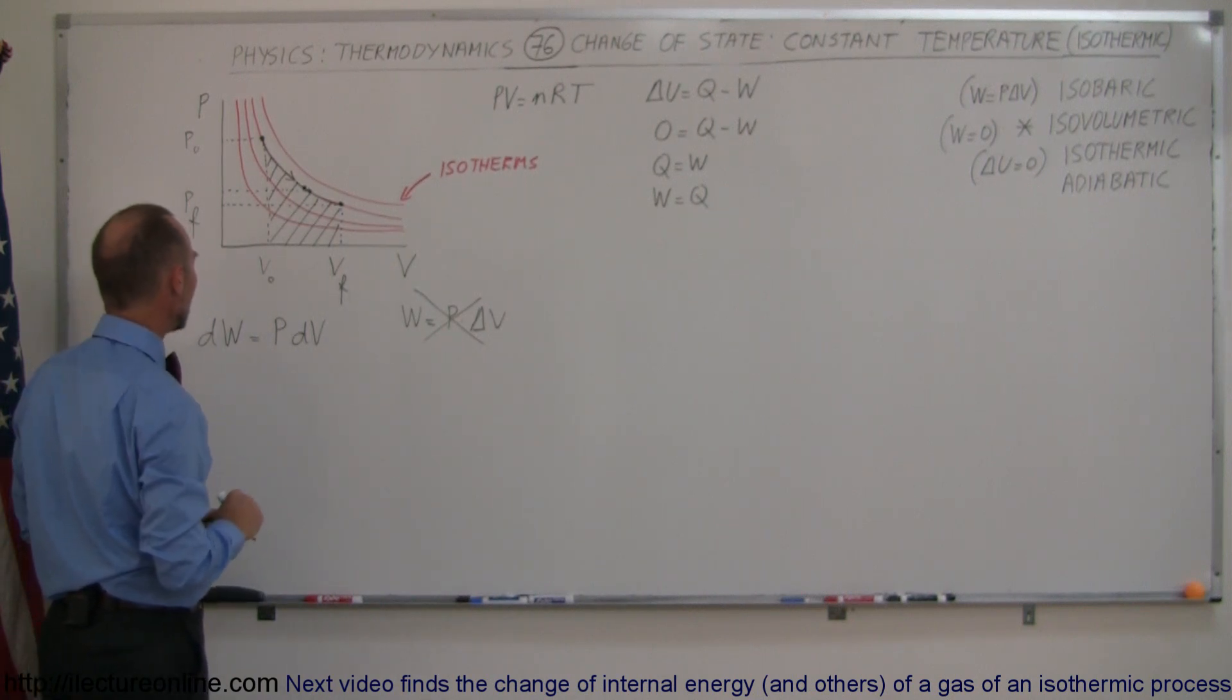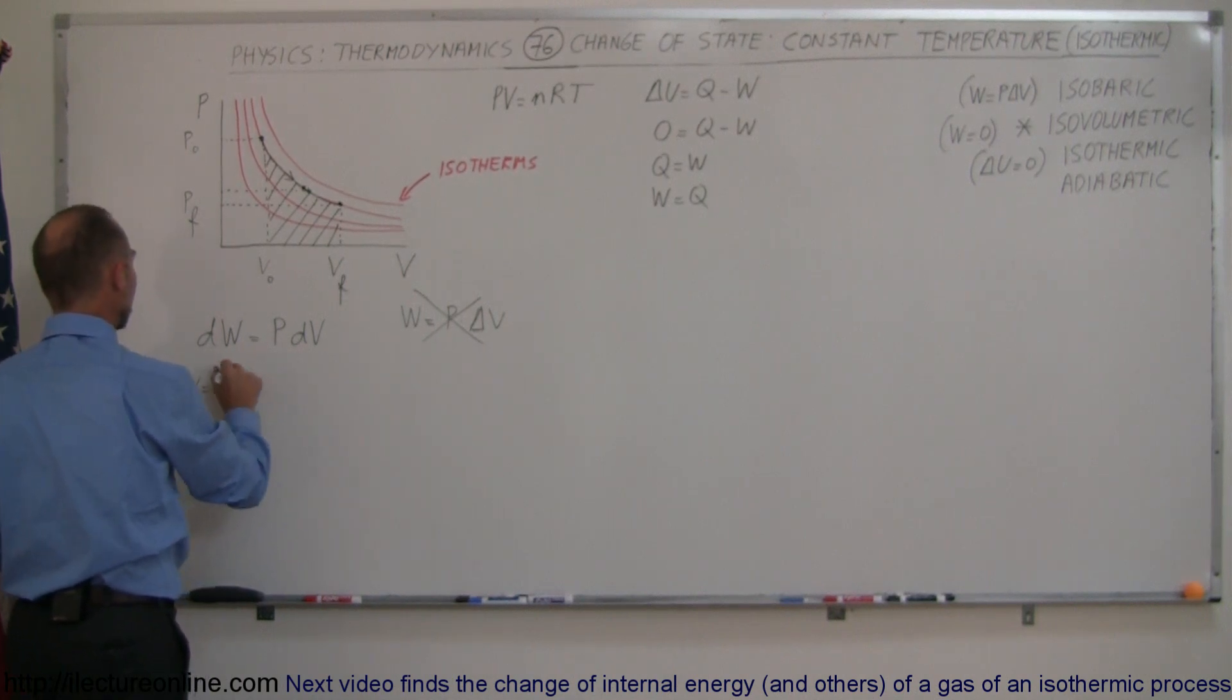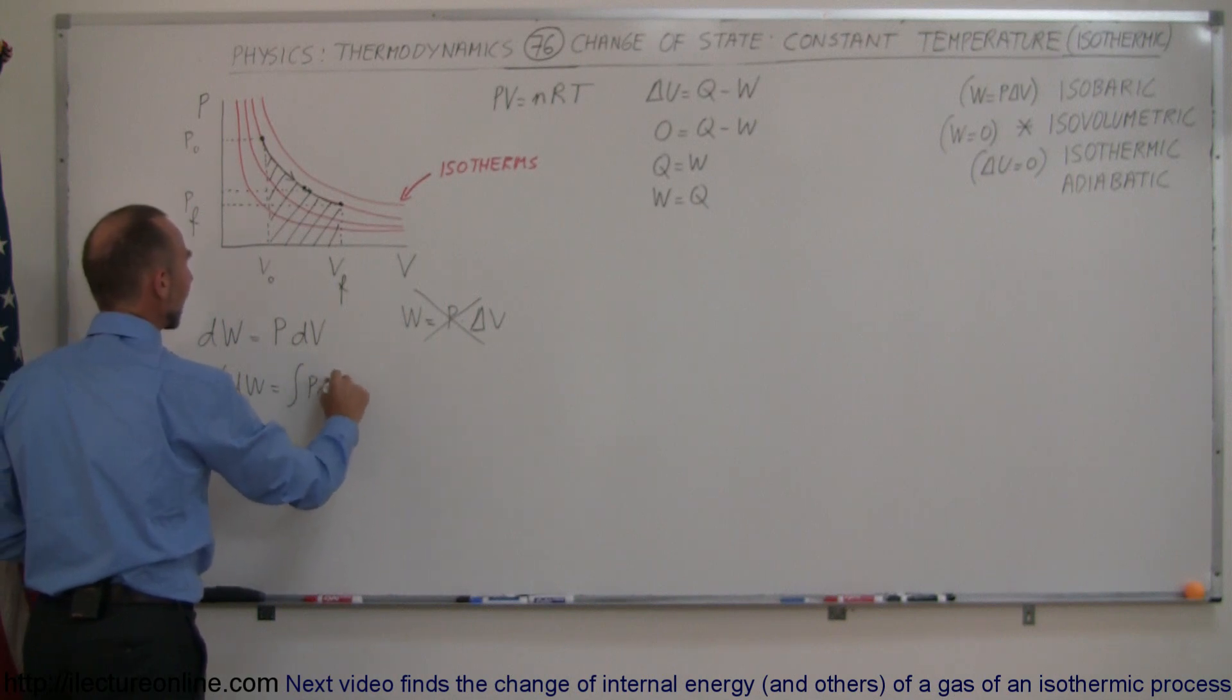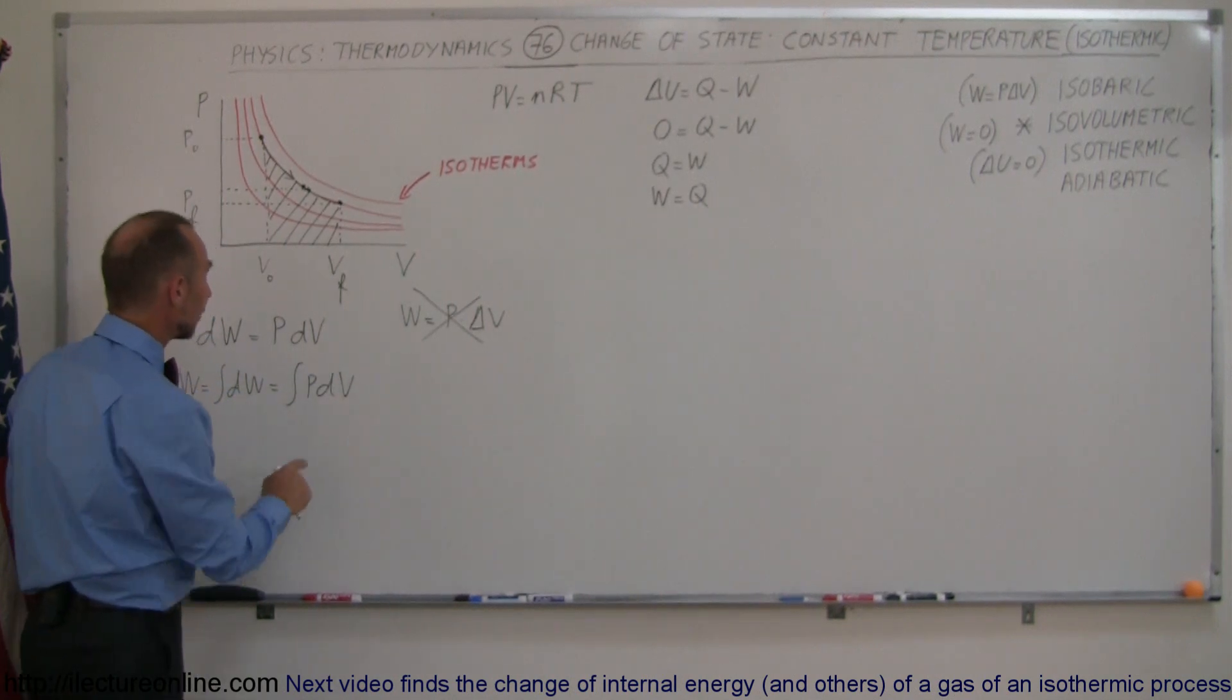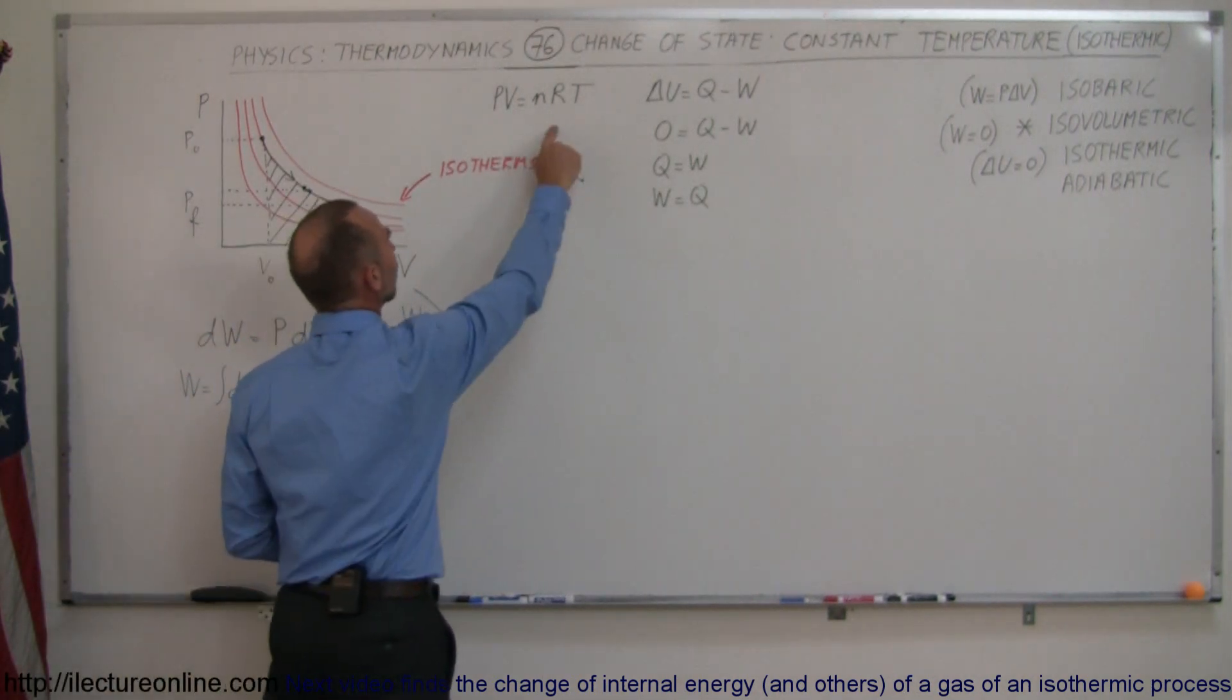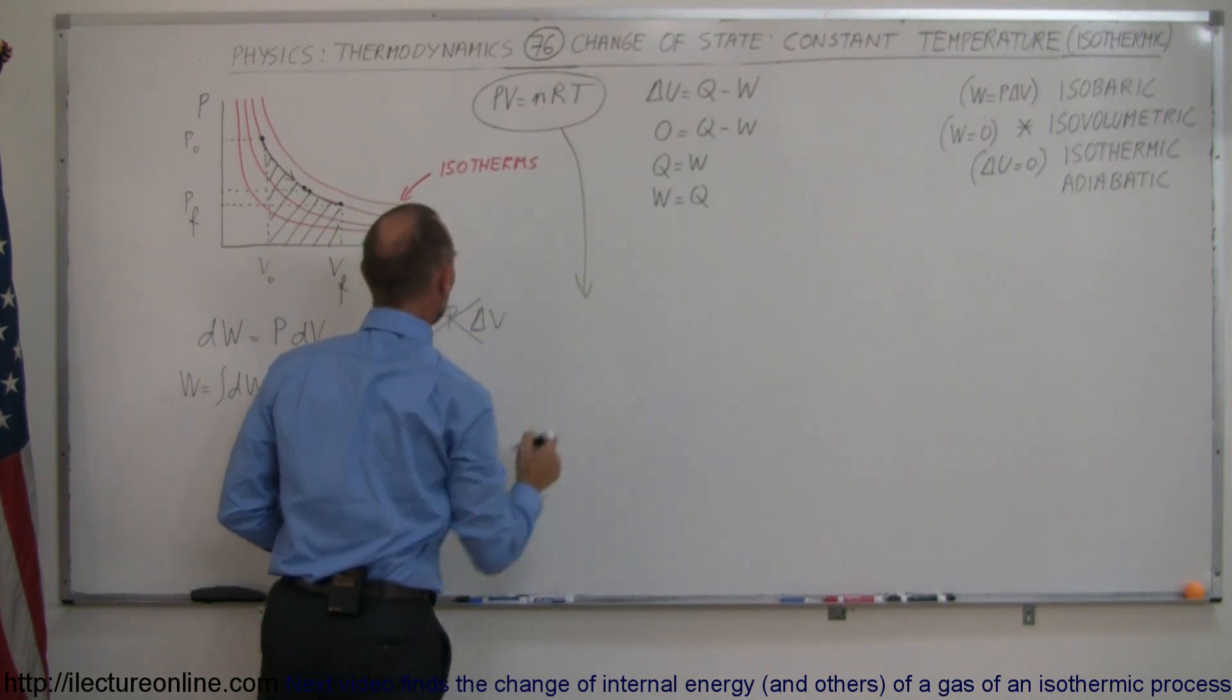All right, now how do we solve for work? Well then simply work is equal to the integral of dw, which is equal to the integral of p times dV. The only problem here is that p is not constant, so therefore we have to go over here to this equation and solve p in terms of v.